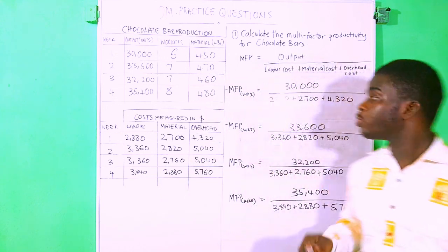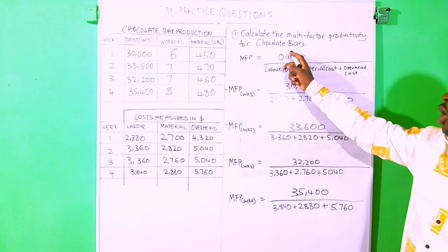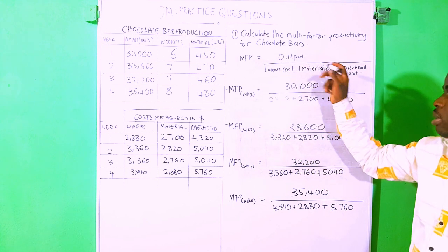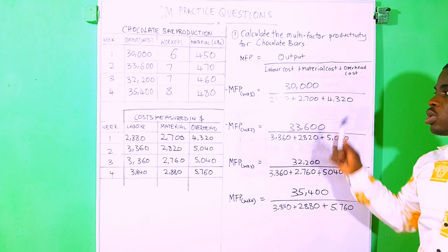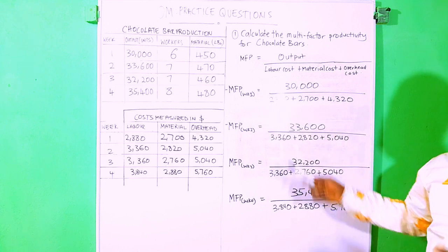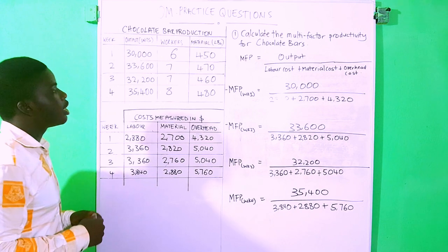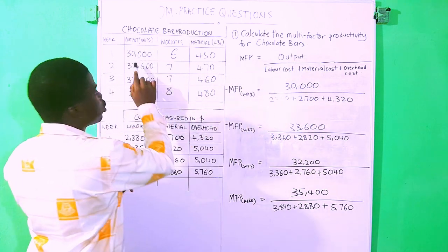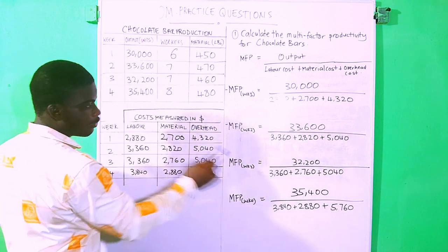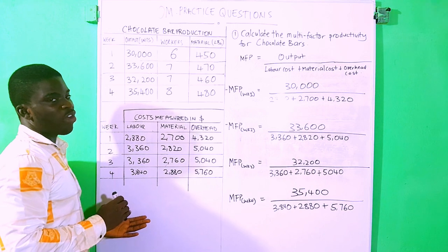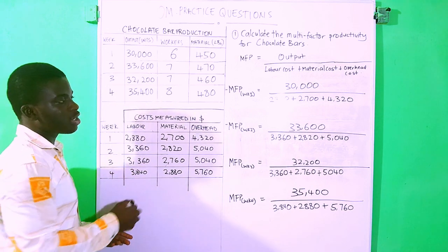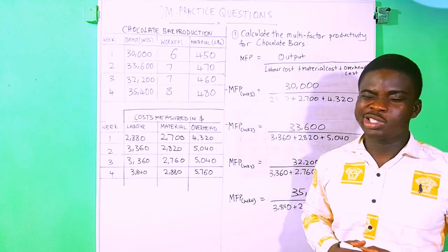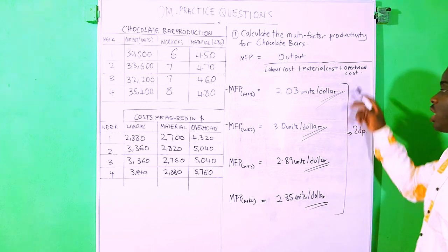We are now at the end. The multi-factor productivity equals output divided by the sum of all input costs, which for this question is labor cost plus material cost plus overhead cost. For each week we use our output values and the costs we have calculated as the denominator. Just enter them into your calculator and you get the answers, rounded to two decimal places.